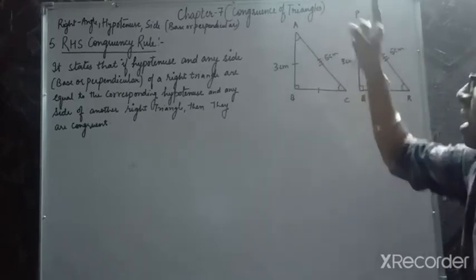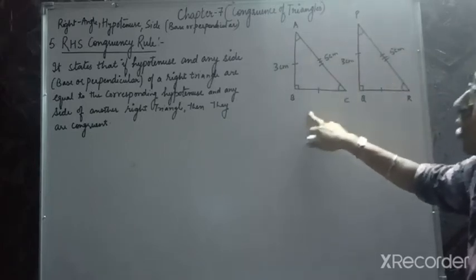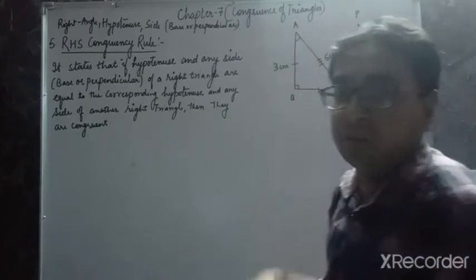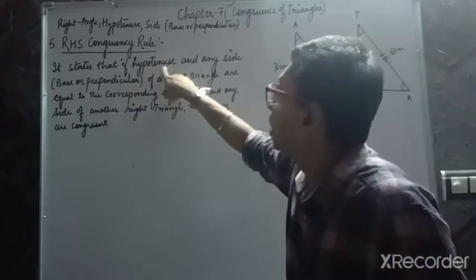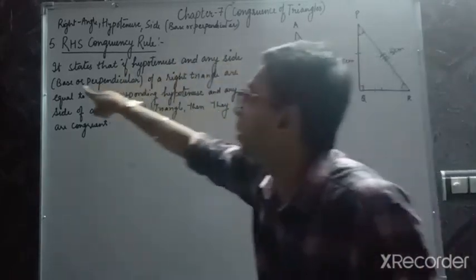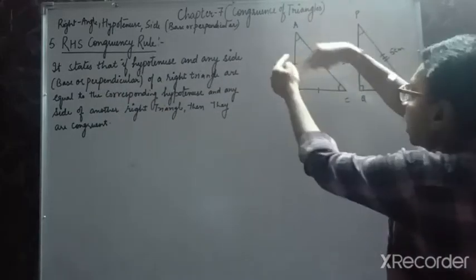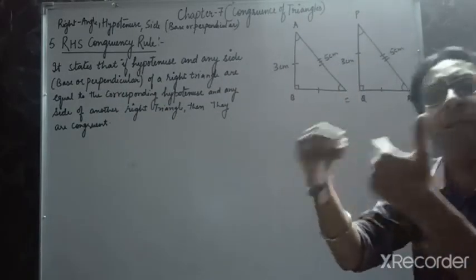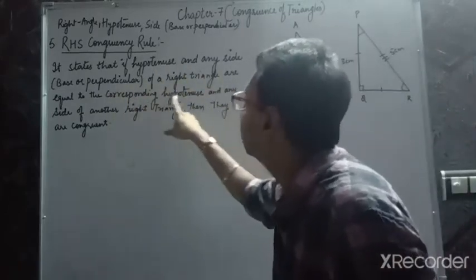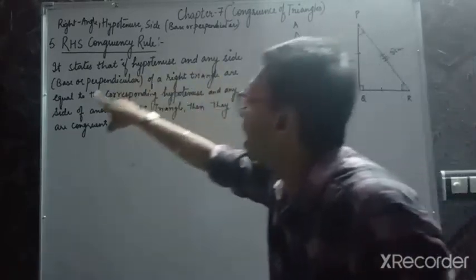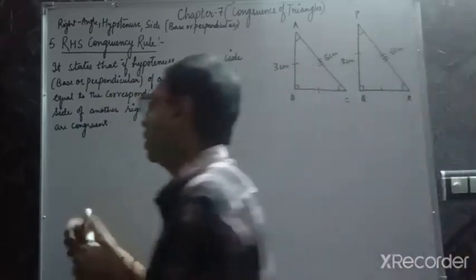It states that if the hypotenuse and any side of a right triangle are equal to the corresponding hypotenuse and any side of another right triangle, then the two triangles are congruent. That side can be the base or the height — either one qualifies.